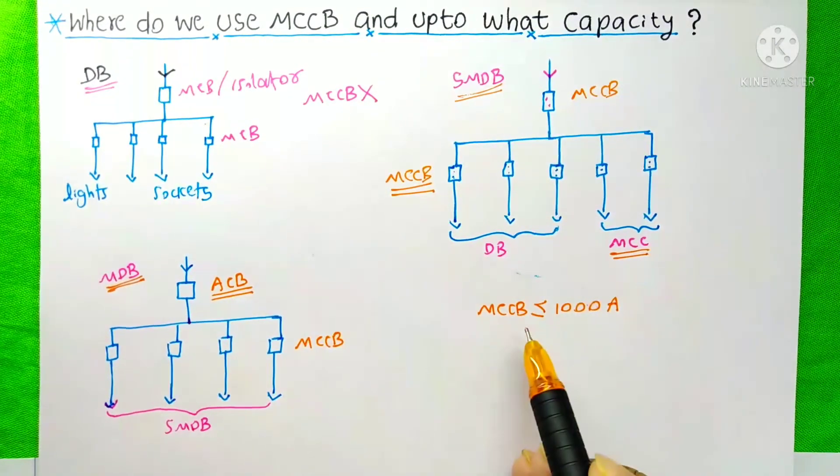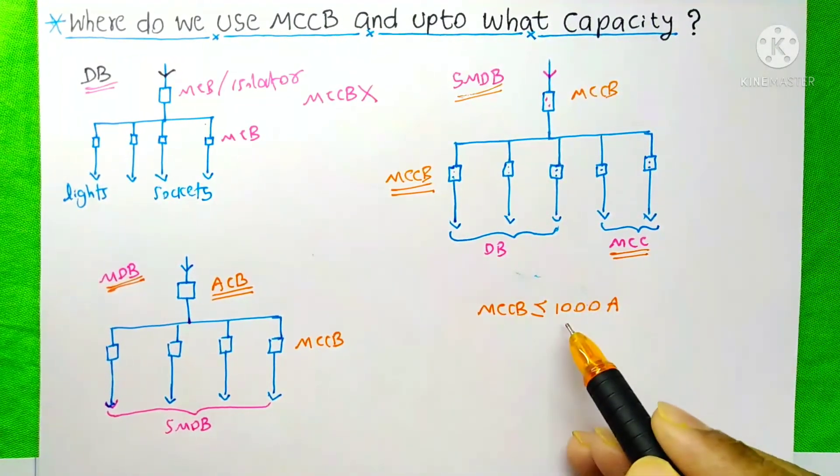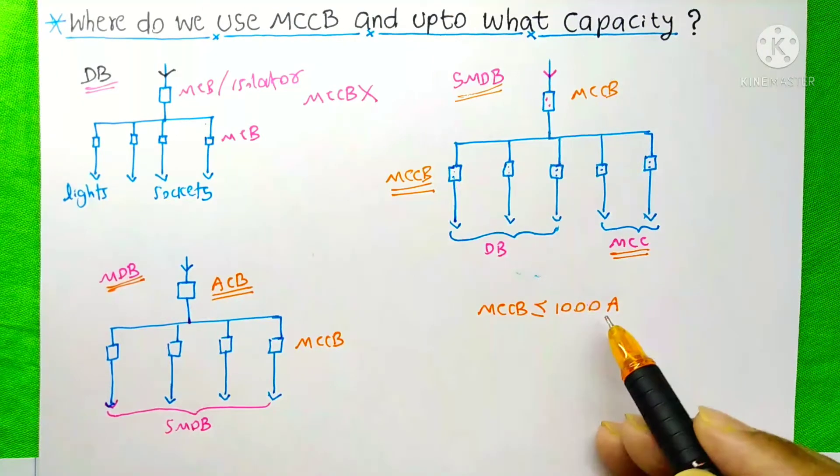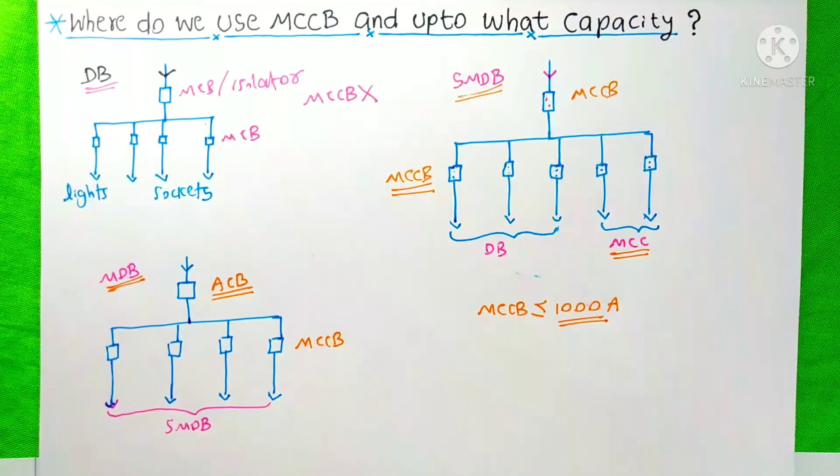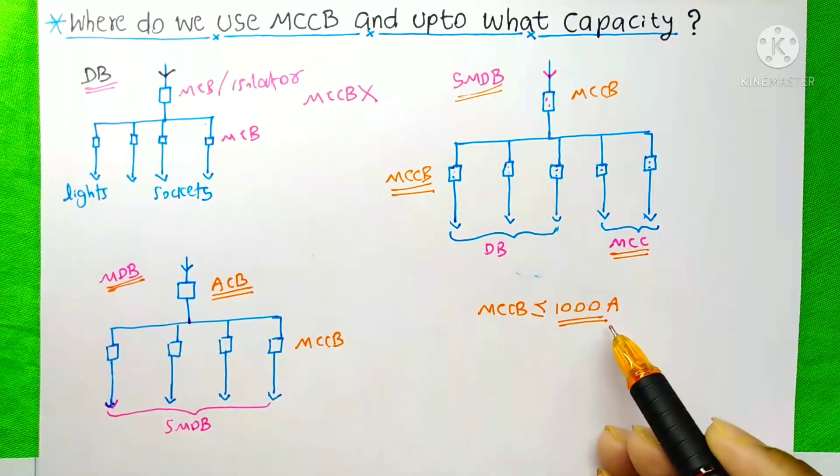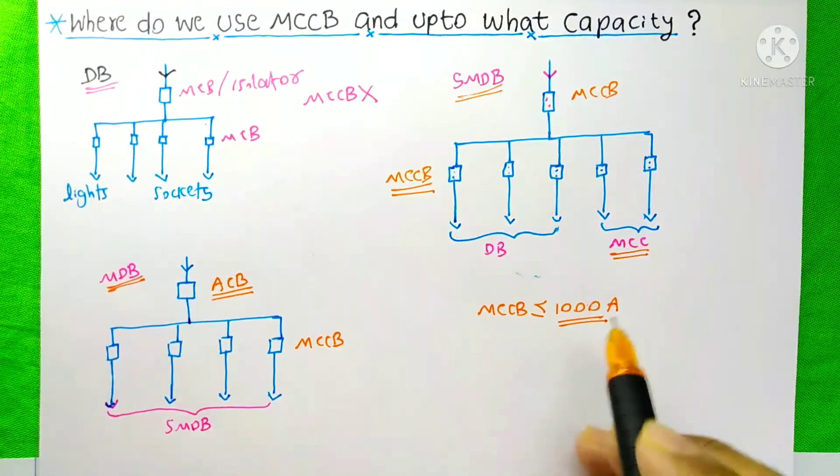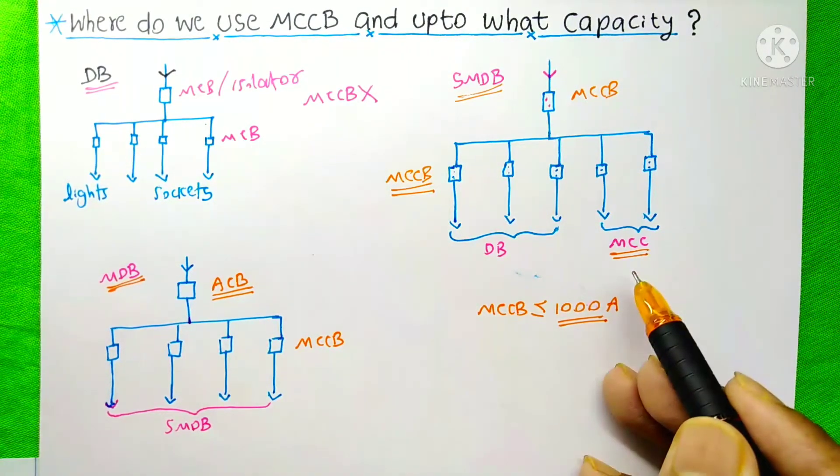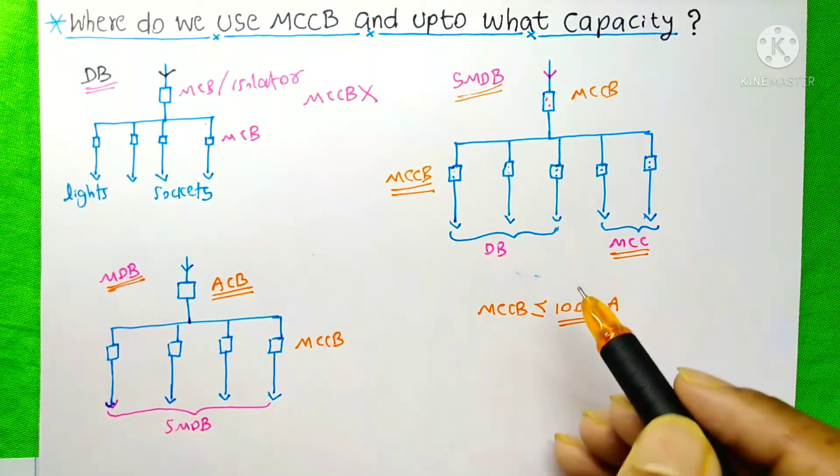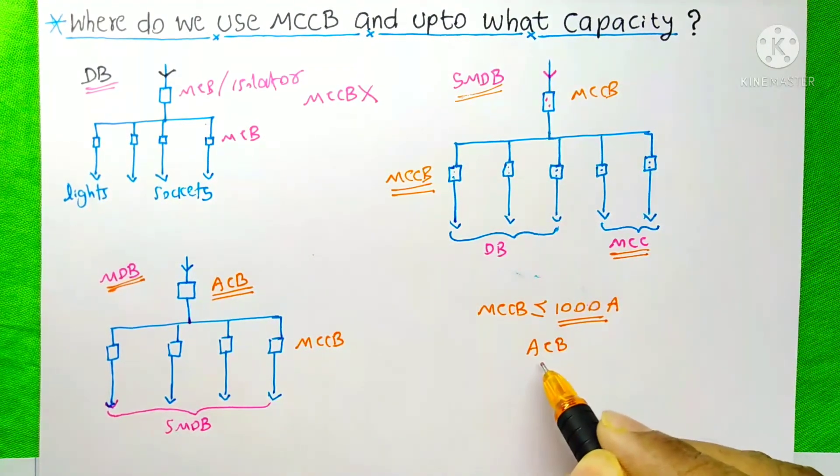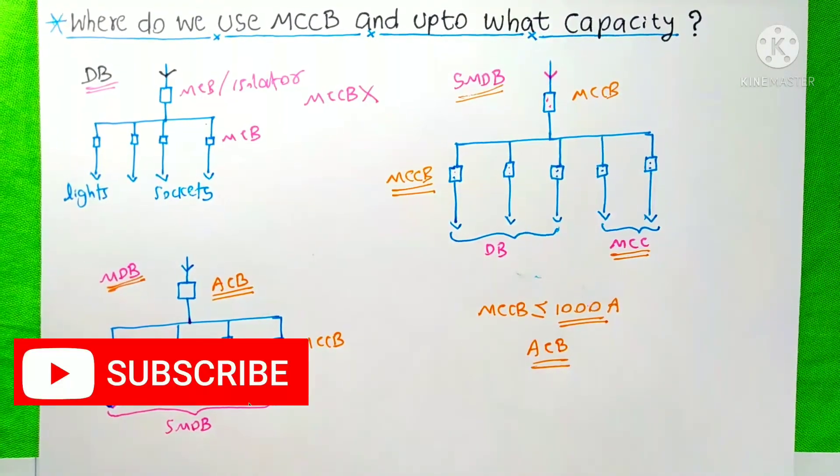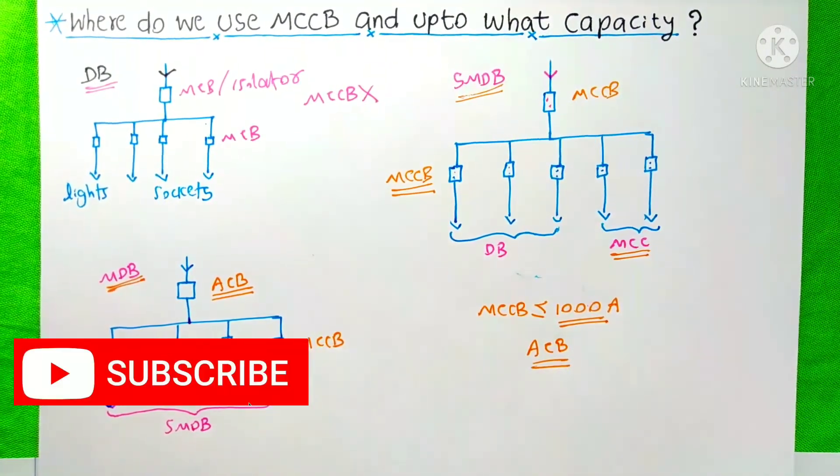Generally we use MCCB if our circuit breakers rating is less than or equal to 1000A. MCCB is available for more than 1000A also in the market. But, generally we use up to 1000A. Above this 1000A, we generally use air circuit breaker or ACB for our purpose.